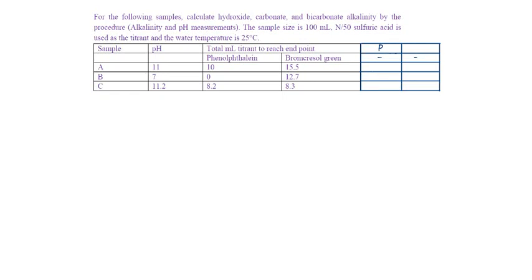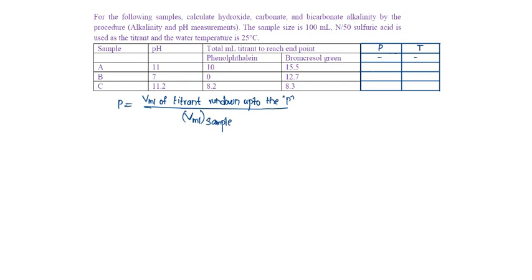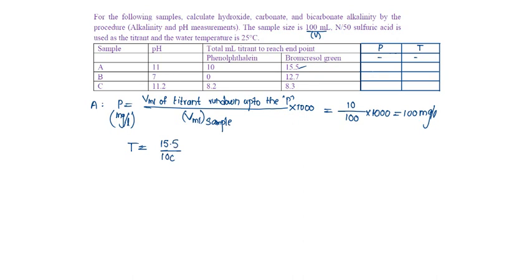Let us indicate phenolphthalein alkalinity as P and total alkalinity as T. Phenolphthalein alkalinity will be equal to volume in mL of titrant run down up to the phenolphthalein alkalinity point, divided by volume in mL of sample taken, multiplied by 1000, to obtain alkalinity in mg per litre. For sample A, that will be equal to 10 divided by 100 into 1000, which equals 100 mg per litre. The total alkalinity will be 15.5 divided by 100 into 1000, which equals 155 mg per litre.